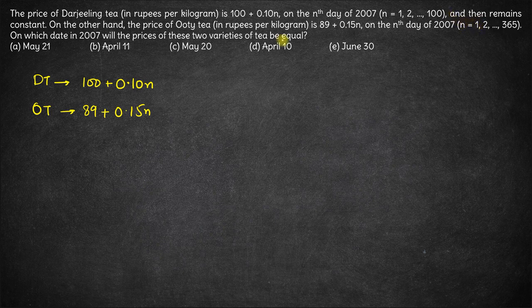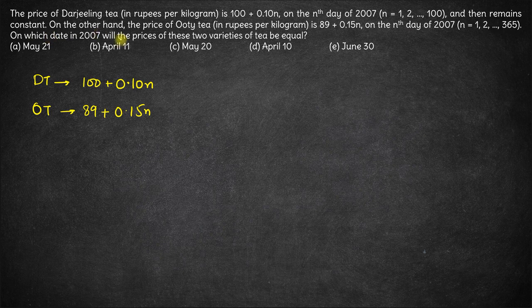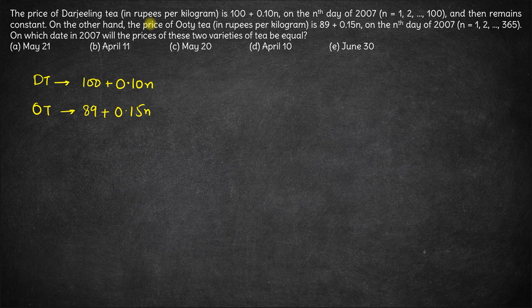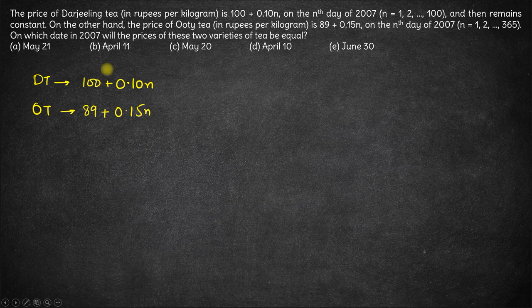Now, on which day in 2007 will the prices of these two varieties be equal? The issue here is the price of OT is changing for the whole year, but the price of Darjeeling is changing only for the first 100 days.